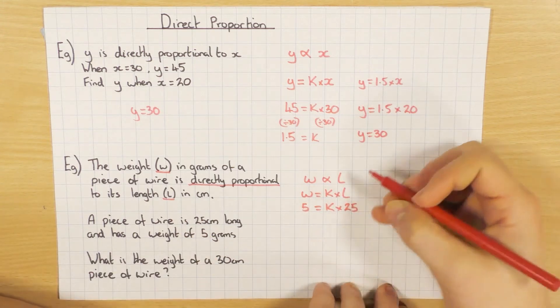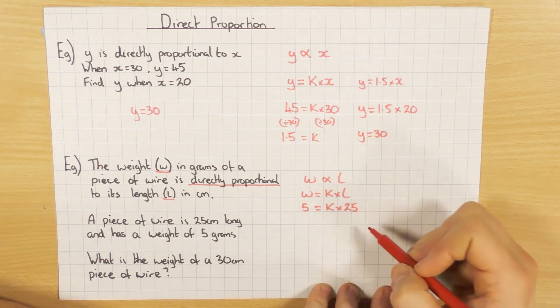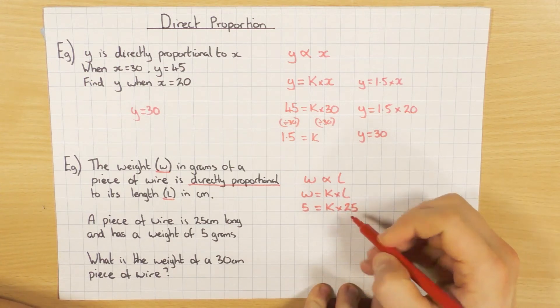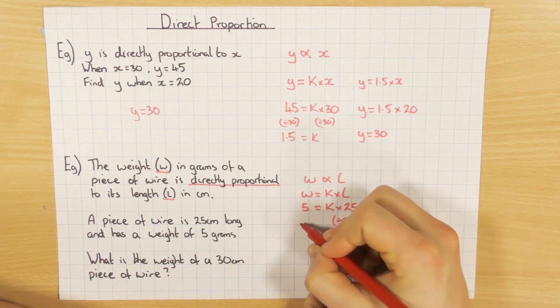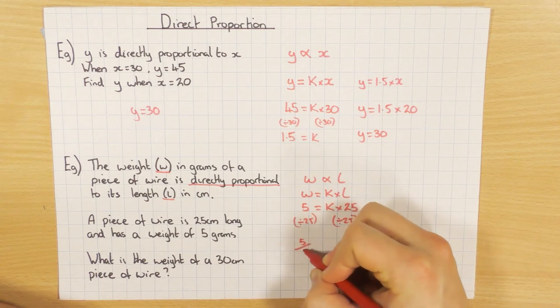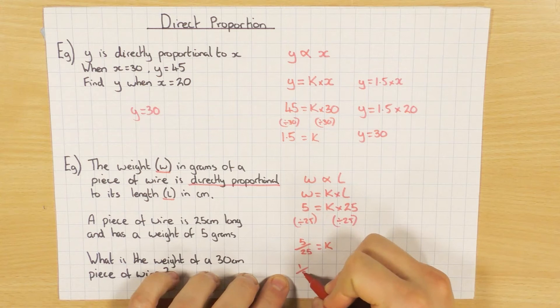So again, rearrange this equation to get what the k is, what the constant is. So I'm times it by 25. So I'm going to divide both sides by 25. So that gives me 5 over 25 equals k. And I'm just going to simplify that to be one-fifth.